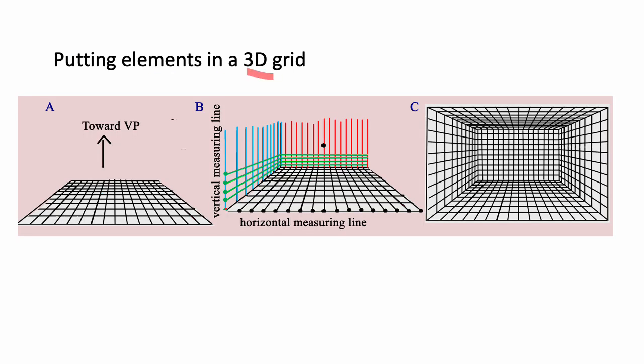You can also put elements to scale in a 3D grid. So I started again with the same grid that we constructed before. And I continue lines up the sides of this room, for example, even in the back. And then you need a vertical measuring line with units marked off. And you have these units converge toward this vanishing point on both sides. But when it reaches the back part, the lines are horizontal. So anyway, you end up with this grid.